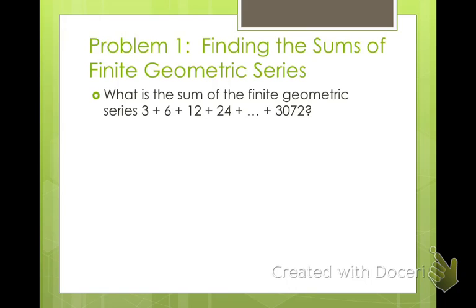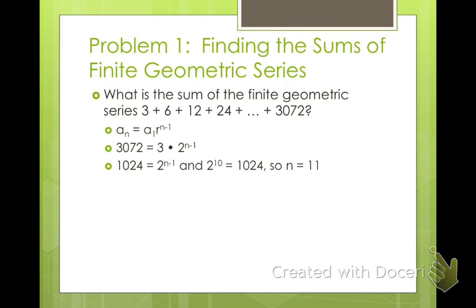What is the sum of the finite geometric series 3 plus 6 plus 12 plus 24, all the way to 3072? Each time we're multiplying by 2. We're going to use our formula for the geometric sequence: A sub n equals A sub 1 times r raised to the power of n minus 1, because we don't know how many terms there are — we're trying to find n. So our nth term is 3072, our first term is 3, and our ratio is 2, raised to the power of n minus 1. Divide both sides by 3 and you get 2 to the n minus 1. Since 2 to the 10th power equals 1024, n must be 11, because 11 minus 1 is 10. So we have 11 terms between 3 and 3072.